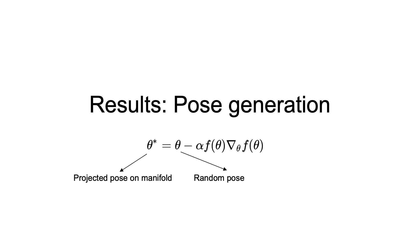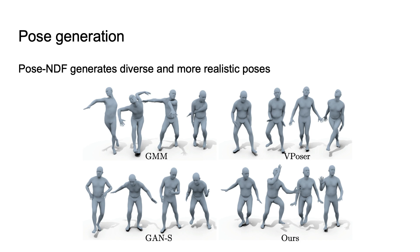Pose NDF can be used to generate random poses by sampling any point in SO3 space and projecting it to the manifold using the distance field and its gradient. We compare the results of pose generation using Pose NDF with GMM, VPoser, and a GAN-based model, and show that Pose NDF produces realistic and much more diverse poses.